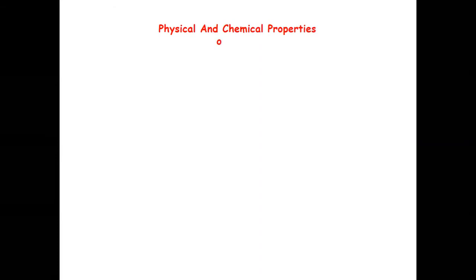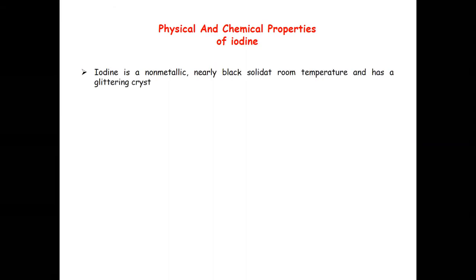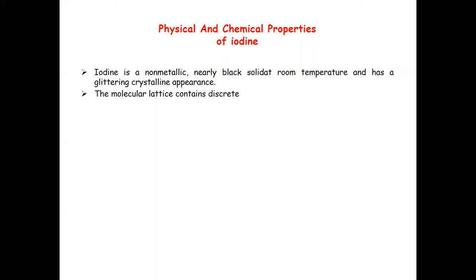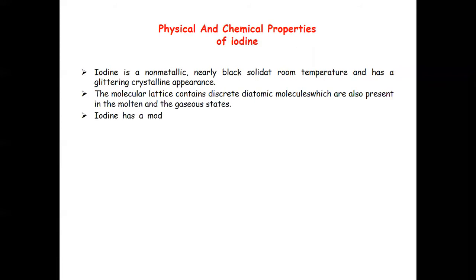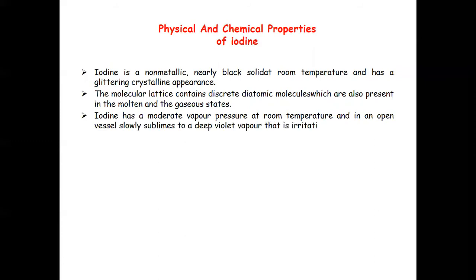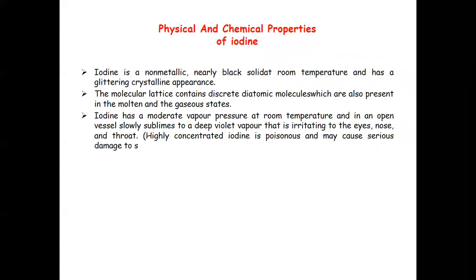The physical and chemical properties of iodine: iodine is a non-metallic, nearly black solid at room temperature and has a glittering crystalline appearance. The molecular lattice contains discrete diatomic molecules, which are also present in molten and gaseous states. Iodine has a moderate vapor pressure at room temperature and in an open vessel slowly sublimes to a deep violet vapor.